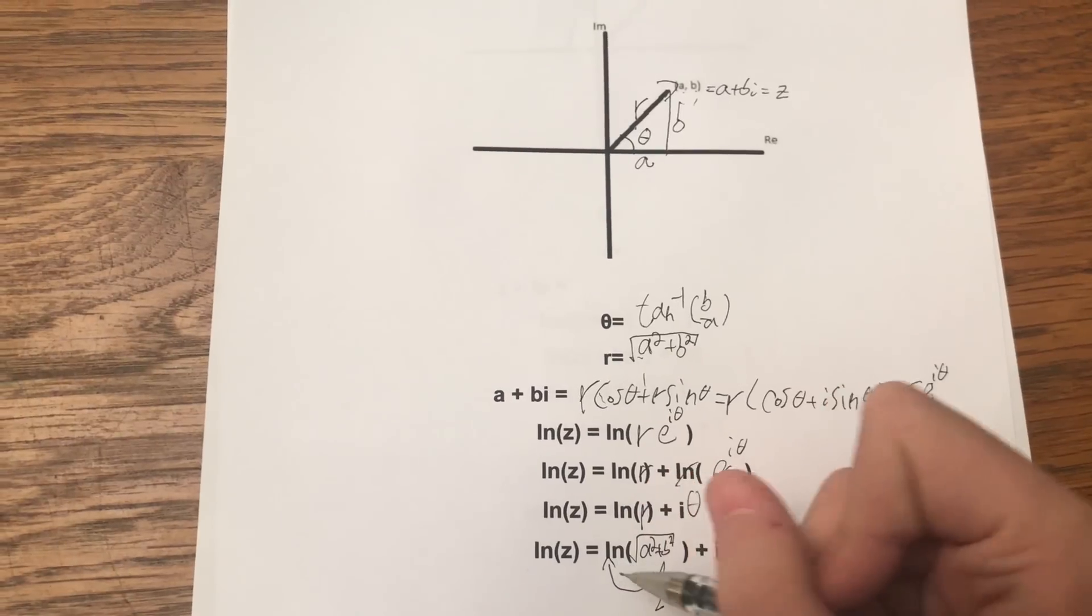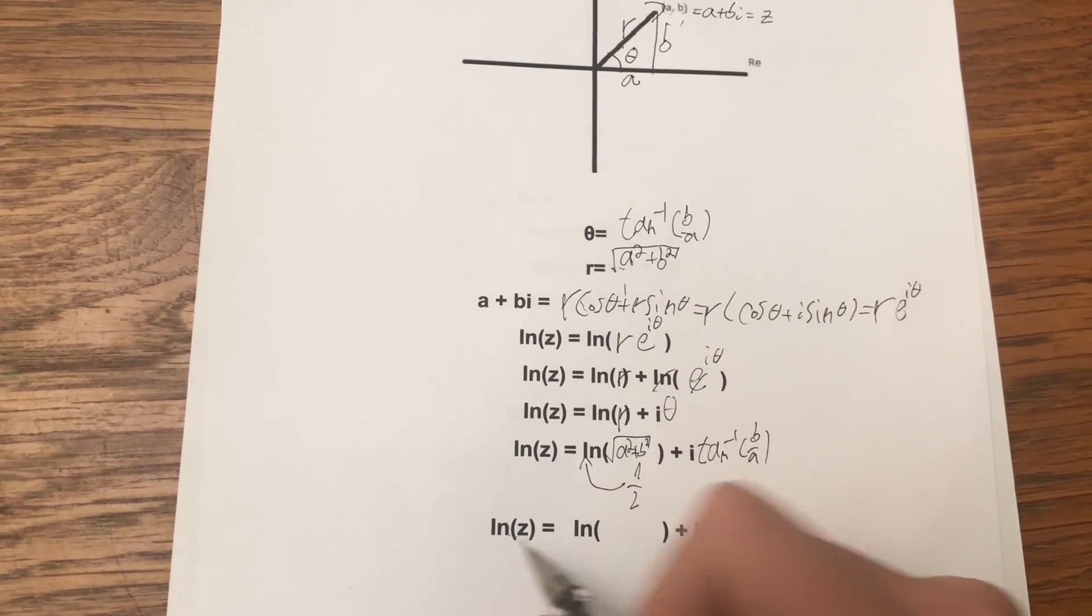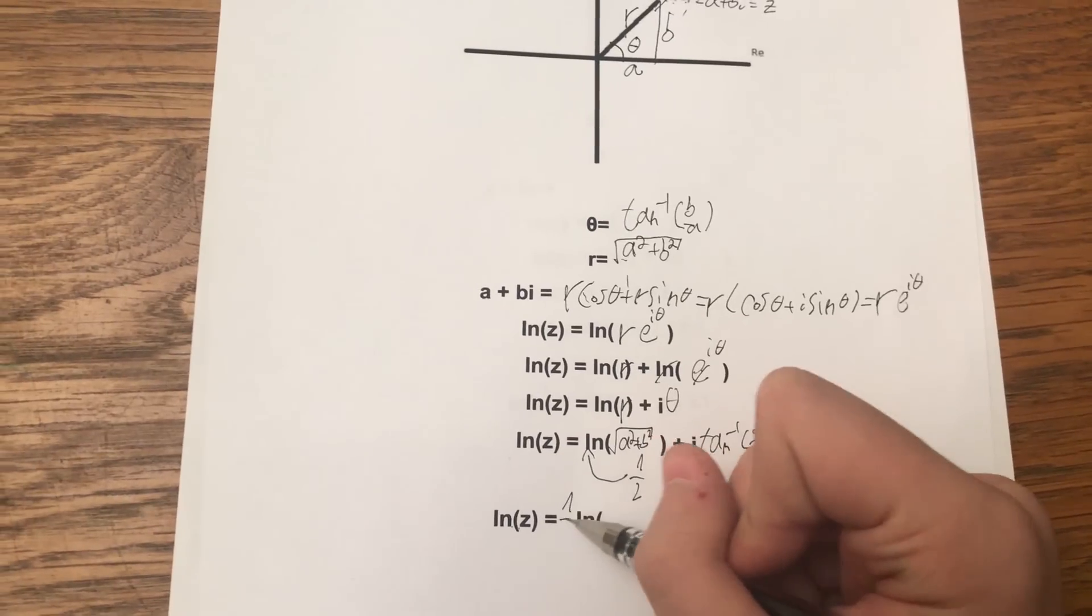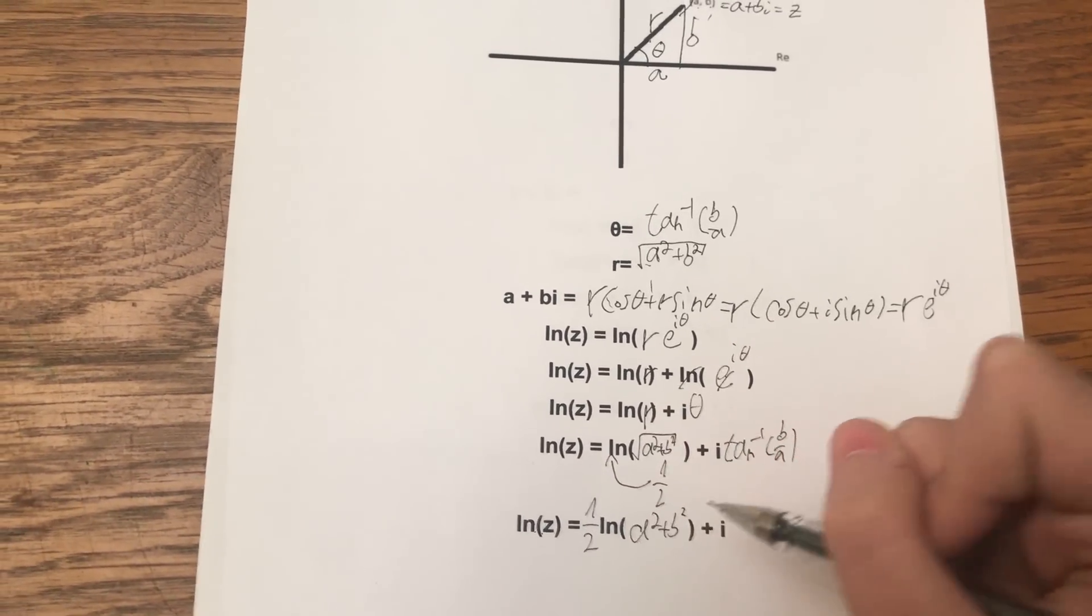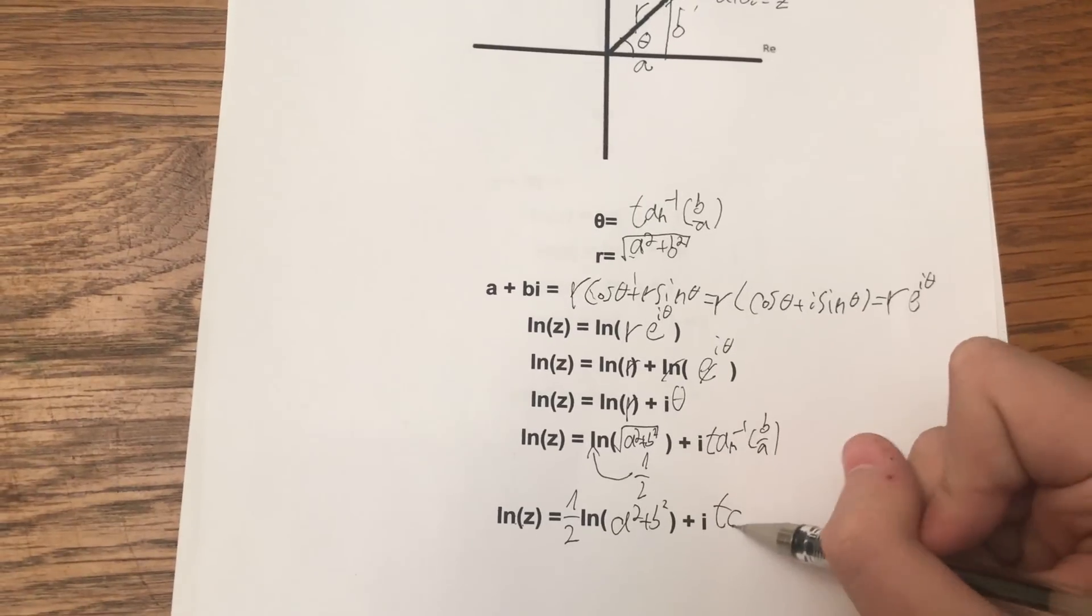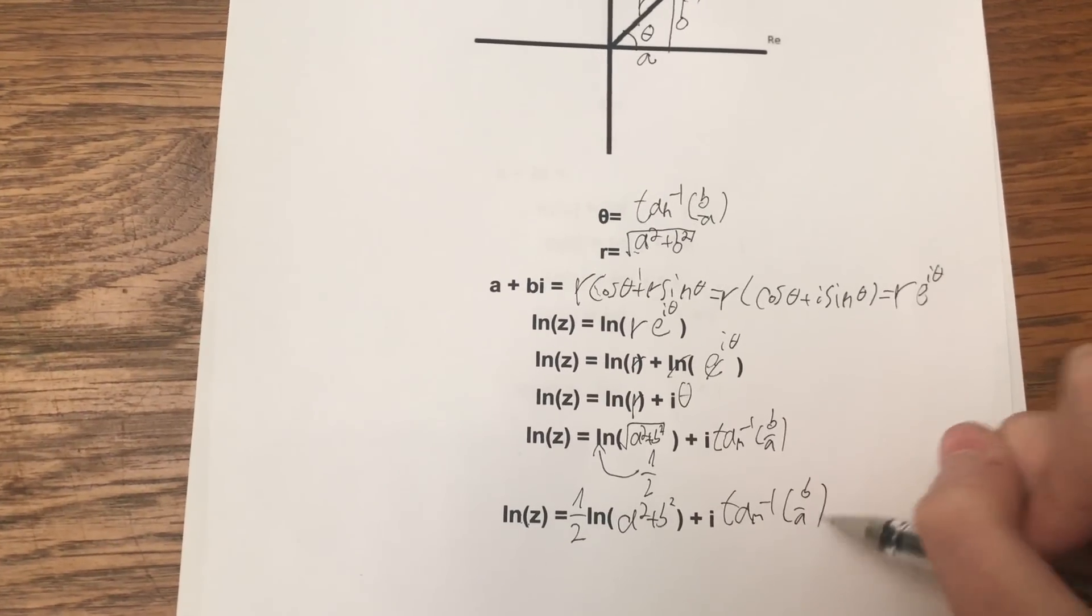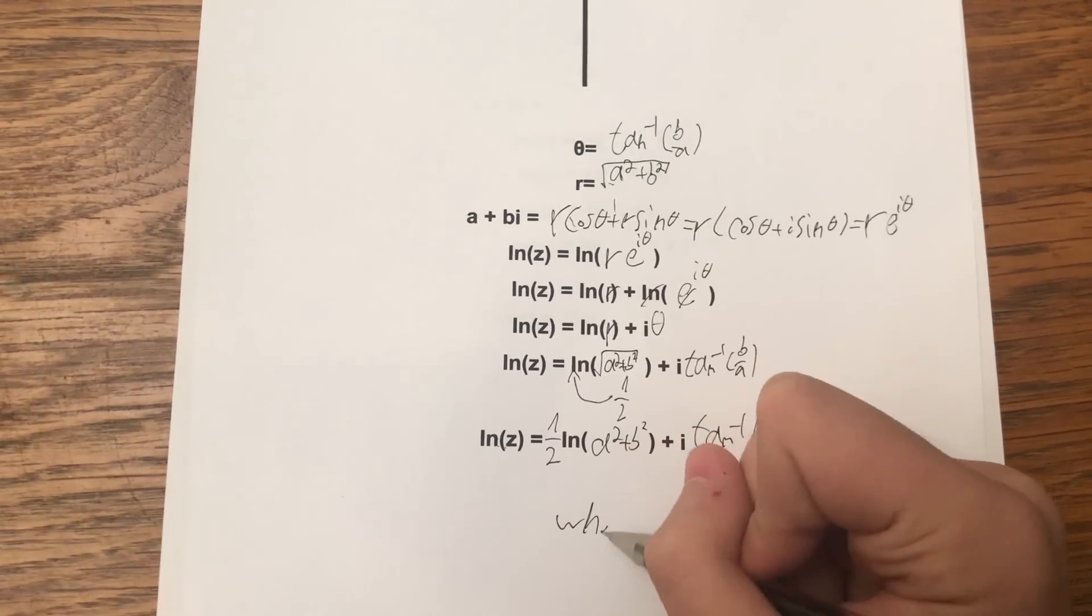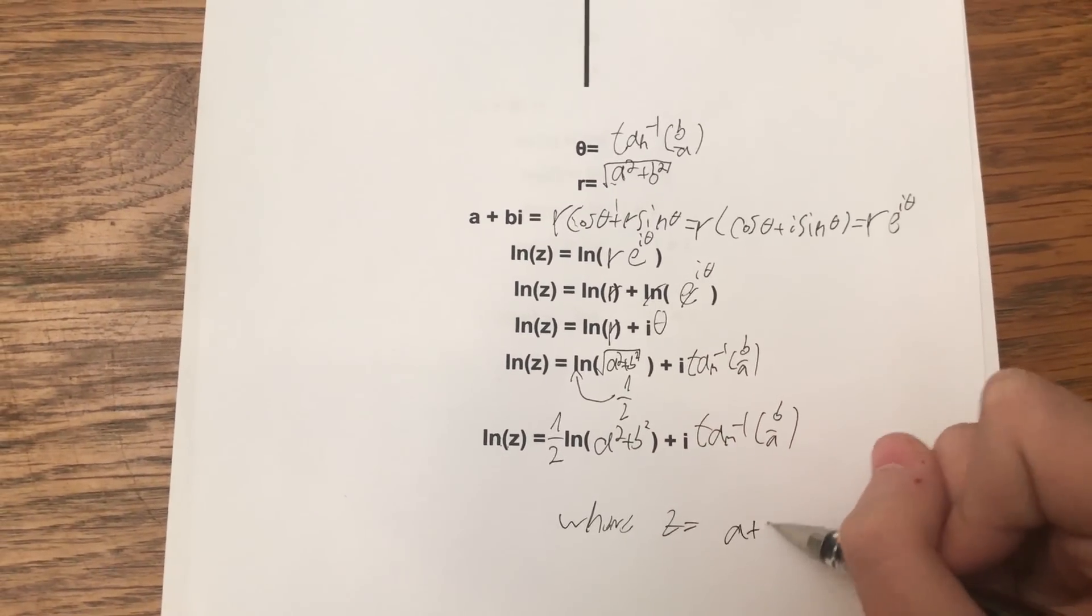So lastly, the ln of z is one half of ln of a squared plus b squared plus i inverse tangent of b over a, where z is equal to a plus bi.